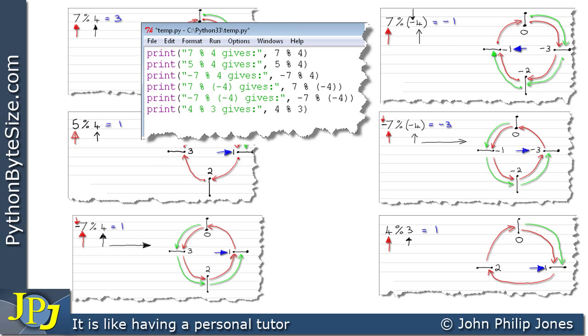Well here's the computer program. Let's have a look at the first line here. We can see that I've got a literal string, then a comma, and then 7 modulus 4. Well of course that's this example here. So we would expect this line to give out 3, because that's what I'm predicting from this sketch.